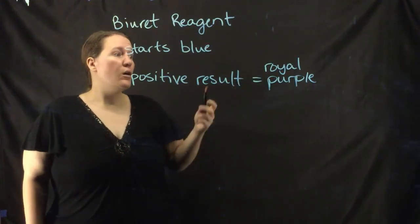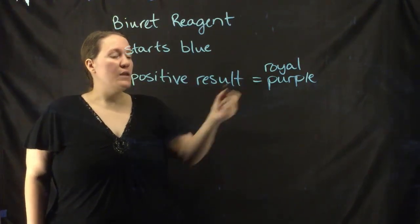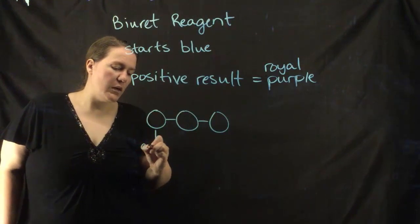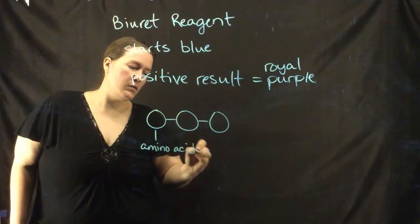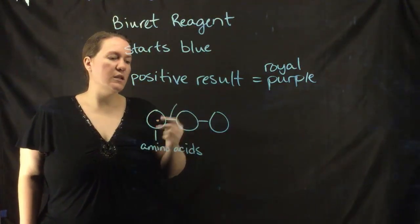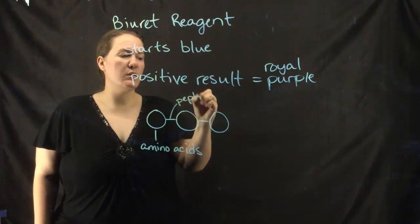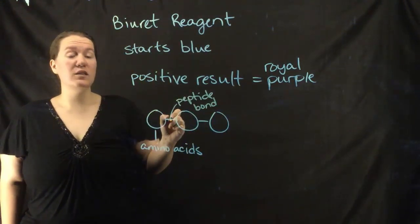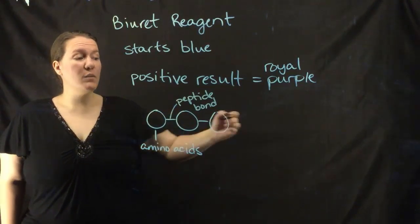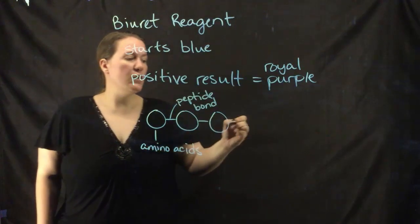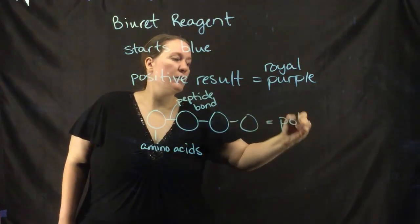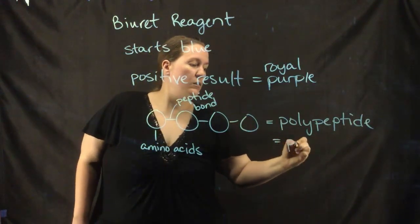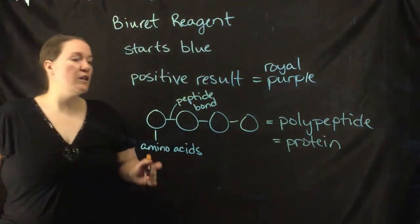What is happening is that the biuret reagent recognizes the bonds between each amino acid. This special bond is called a peptide bond. The biuret reagent seeks out these bonds and dyes them purple. If you have a polypeptide — many amino acids put together — that can also be called protein. So this is a test for protein.